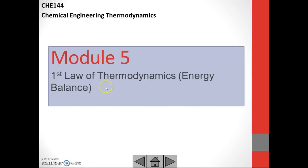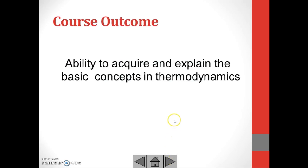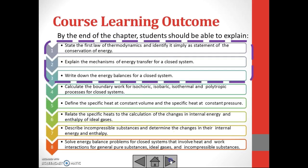Module 5 is about the first law of thermodynamics. We will cover the energy balance. The course outcome for this module is the ability to acquire and explain the basic concepts in thermodynamics. By the end of the chapter, students should be able to state the first law of thermodynamics, identify the conservation of energy, explain the mechanisms of energy transfer for a closed system, and write down the energy balances for a closed system.